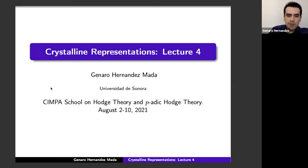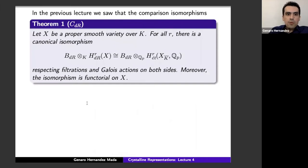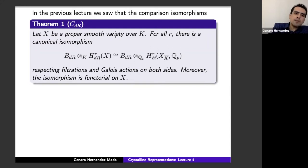Thank you for being here in this last lecture of our course. In the previous lecture we saw the comparison isomorphisms — specifically C_dR, which relates the de Rham cohomology of X, where X is a proper and smooth variety over K (a p-adic field), with the étale cohomology via the period ring B_dR. This isomorphism is functorial and respects filtrations and Galois actions.